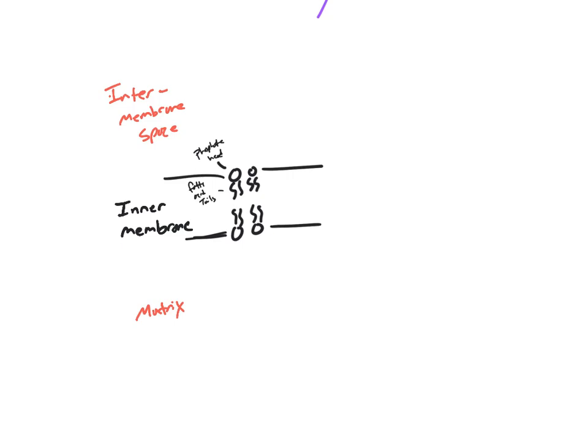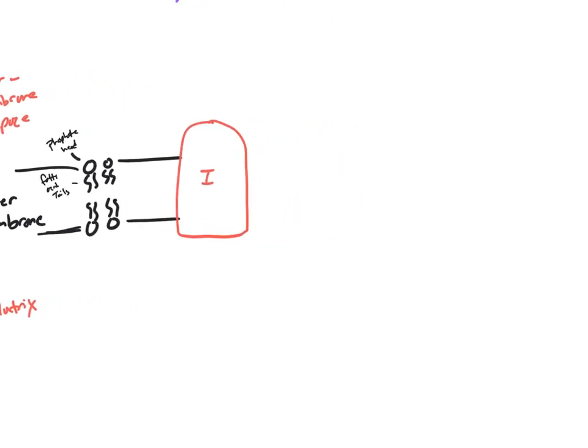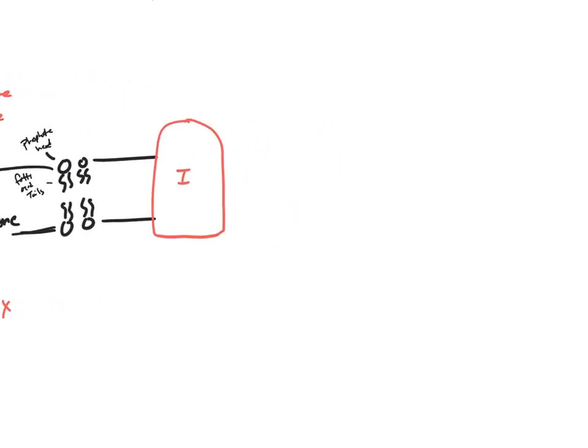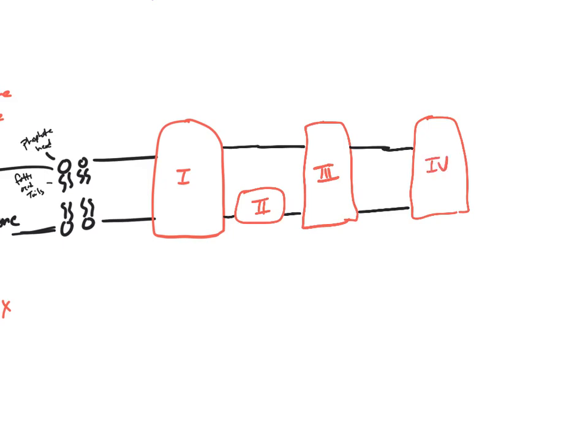Involved in the electron transport chain are a bunch of proteins. This is protein number one, two, three, four.